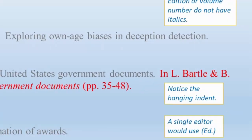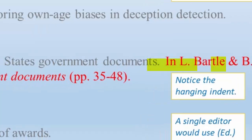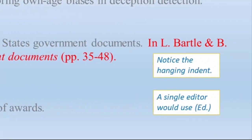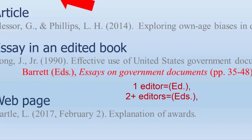Skipping down to the essay in an edited book, you can see the word IN is a signal that the information for the book is to follow the title of the essay. Place IN, then the editor's names with the initial of the first name, a period, and a space, then the last name. In this example, you can see that there are two editors, so their names are separated with an ampersand. After their names comes the parenthetical note that they are editors. If there is a single editor, it appears as a parenthesis, capital E, lowercase d, and a period, parenthesis, and a comma. If there are two or more editors, it appears as parenthesis, capital E, lowercase d, lowercase s, and a period, parenthesis, and a comma. So, Ed for one, and Eds for two or more.